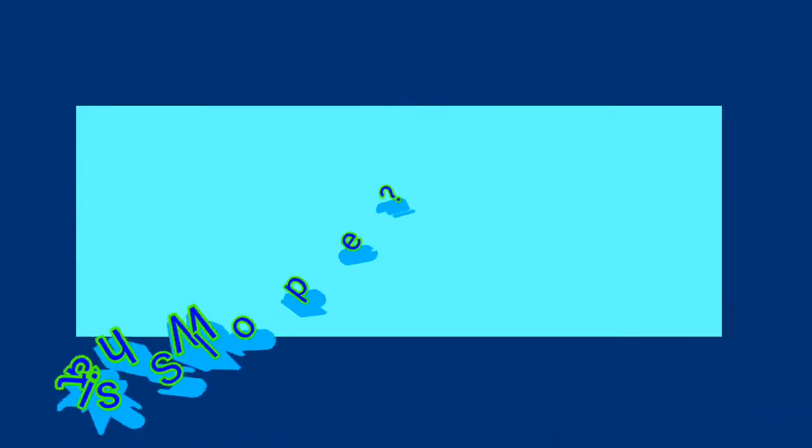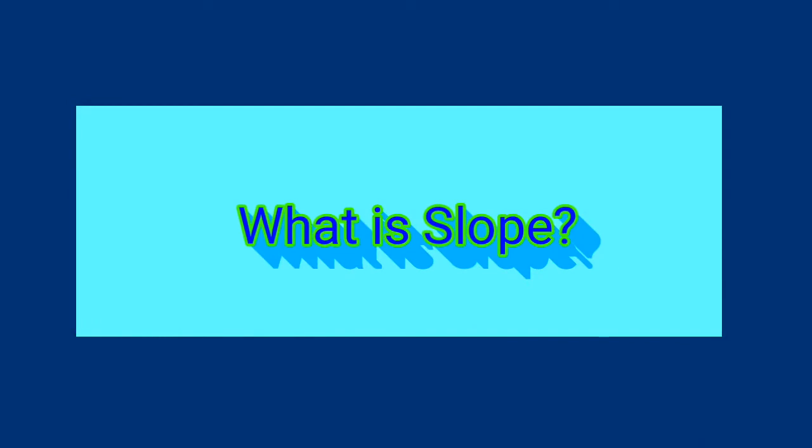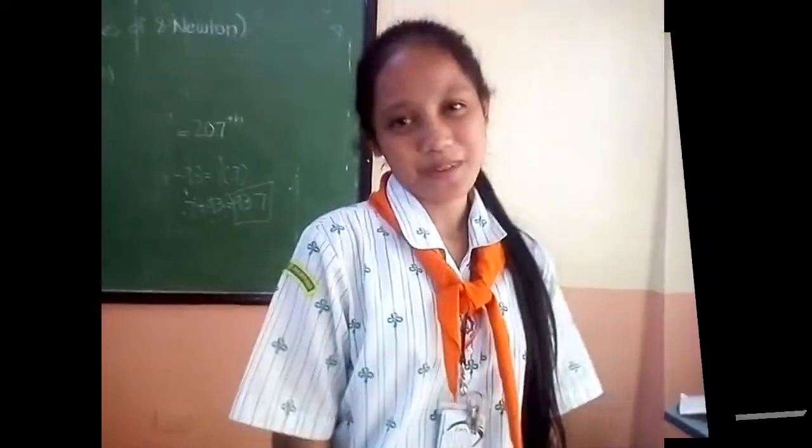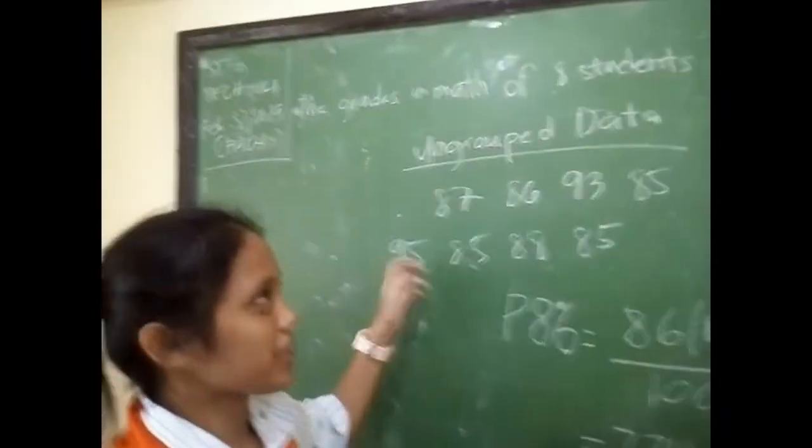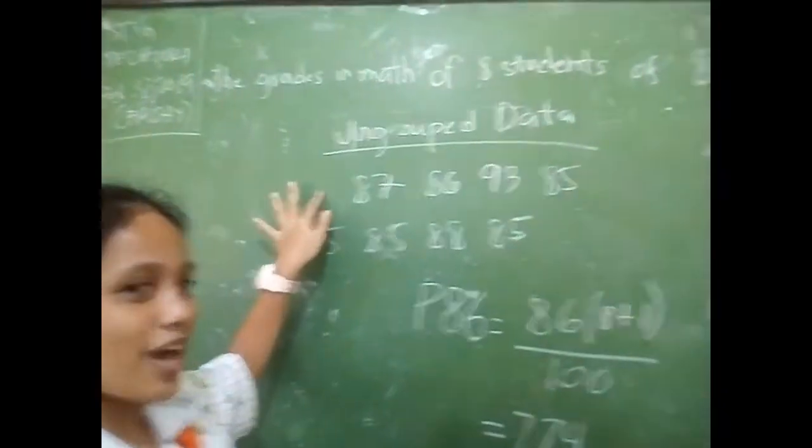Today we're going to help you find the percentile and percentile rank for grouped and ungrouped data. This is percentile. Percentile is a data point that divides the data set into 100 equal components. For the grade scores for students in mind, we have the ungrouped data.